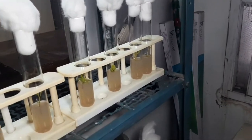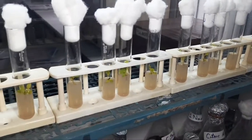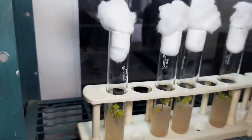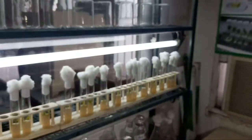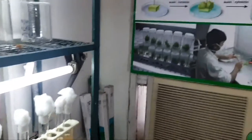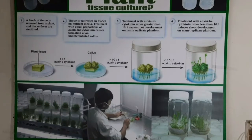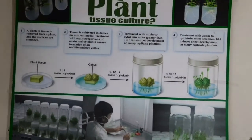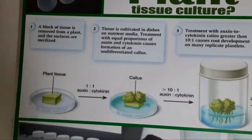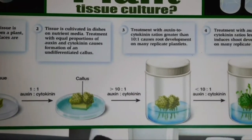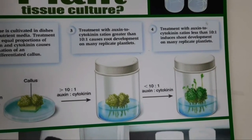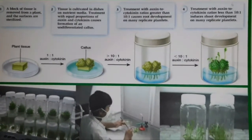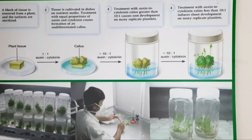This is somatic tissue culture. When we put somatic tissue in culture media, cytokinin and auxin play an important role for rooting and shooting. A high ratio of auxin to cytokinin favours root initiation, while a high ratio of cytokinin to auxin favours shoot initiation.